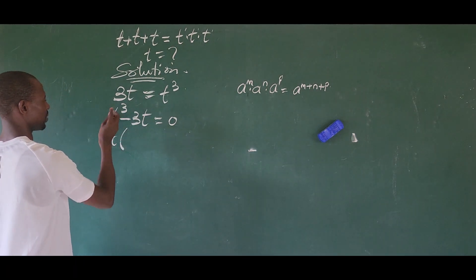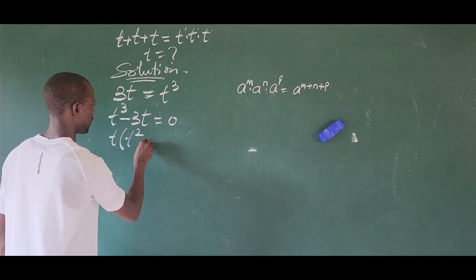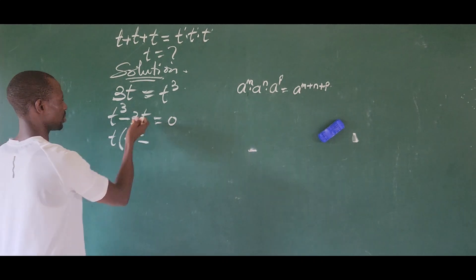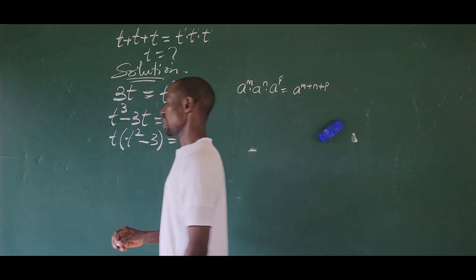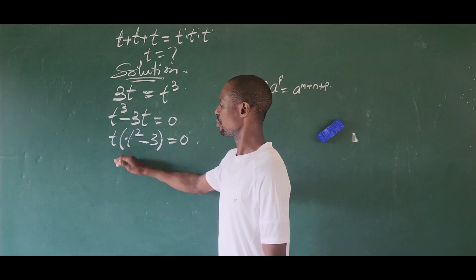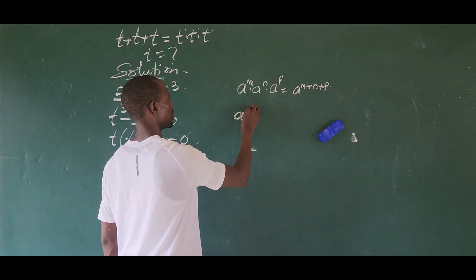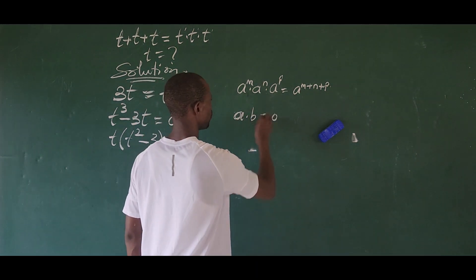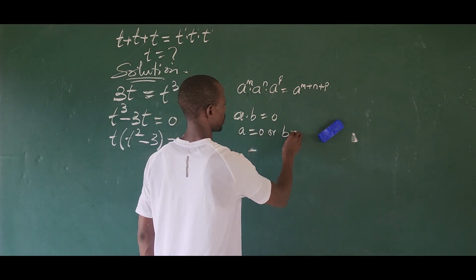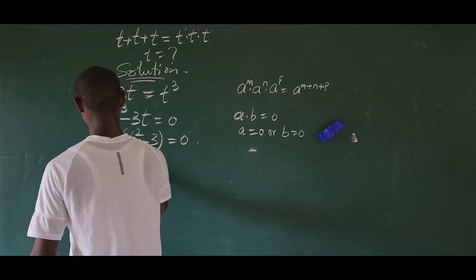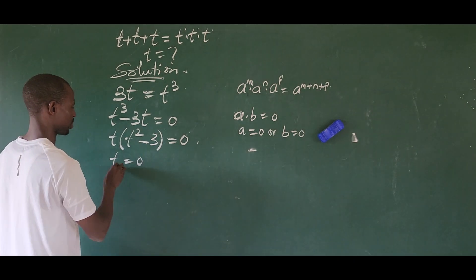We factor out t, leaving us with t times the quantity t squared minus three, equals zero. We apply the rule: if a times b equals zero, then a equals zero or b equals zero.